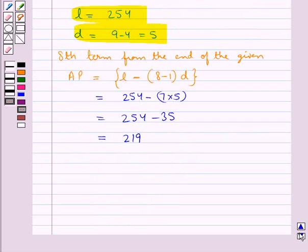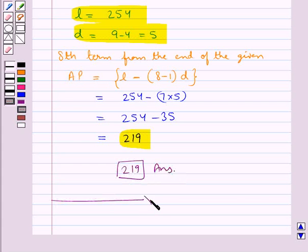So the 8th term from the end of the given AP is 219. So 219 is the required answer. This completes the session. Hope you have understood the solution of this question.